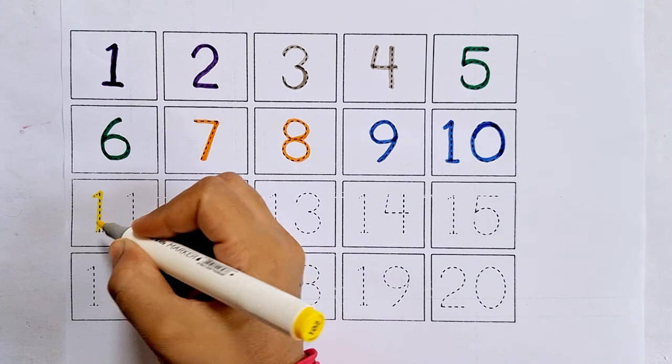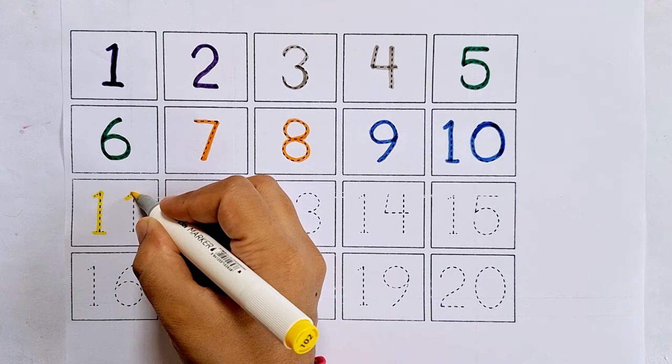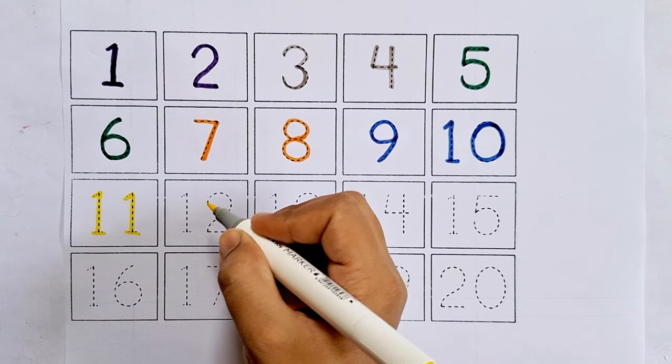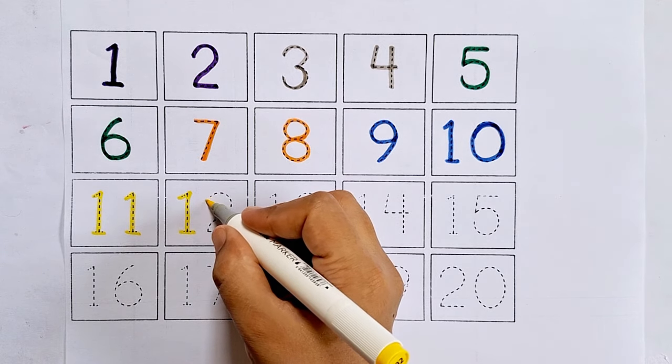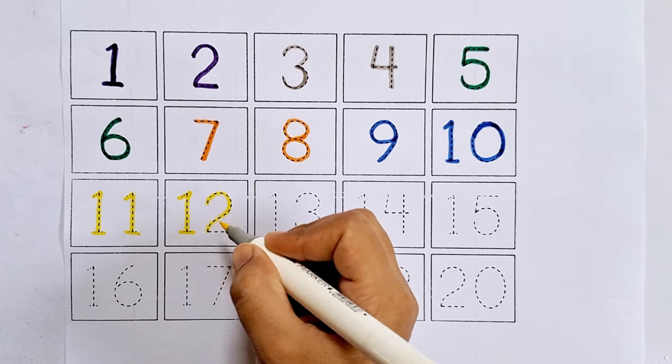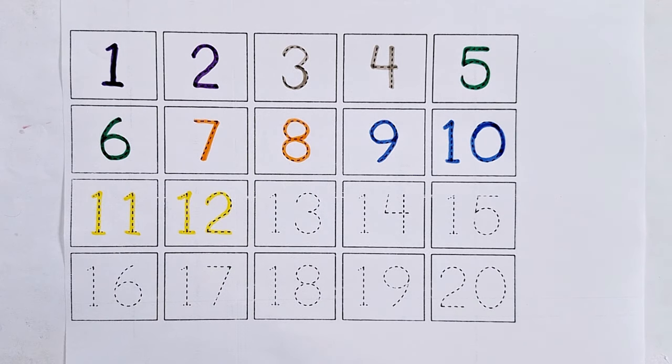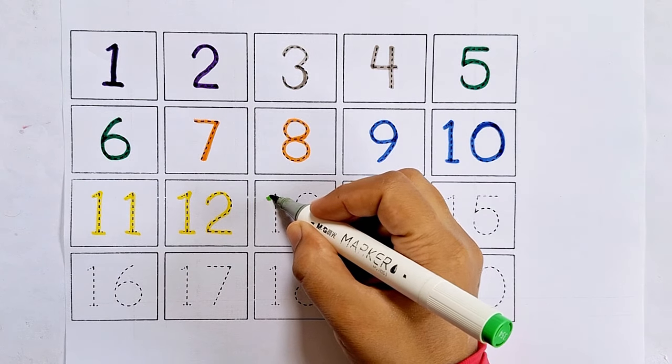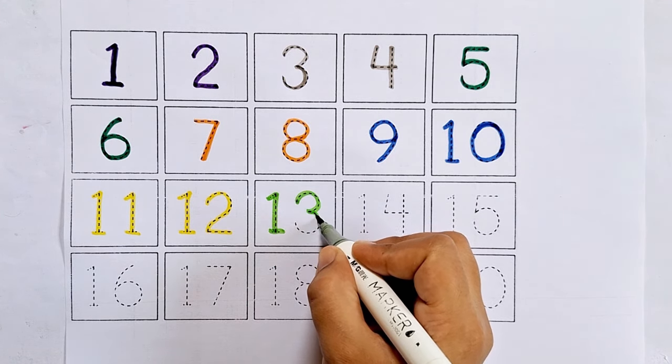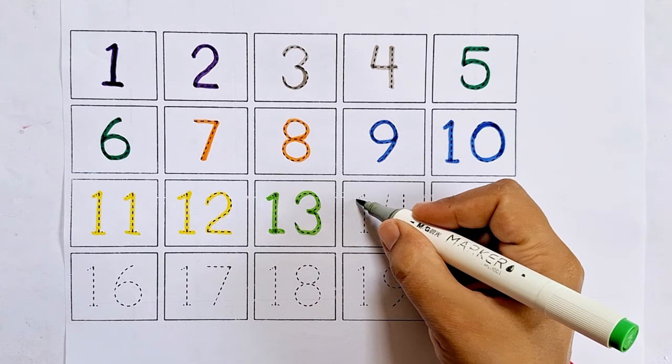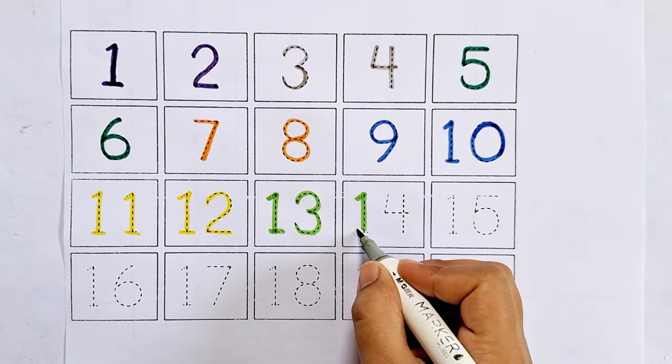Eleven. One one, eleven. After ten comes eleven. Twelve. One two, twelve. After eleven comes twelve. Thirteen. One three, thirteen. After twelve comes thirteen. Fourteen. One four, fourteen.